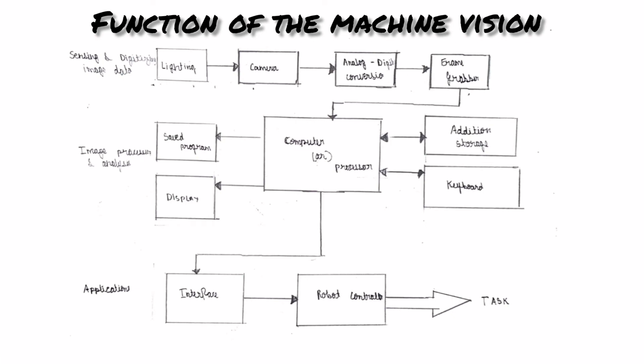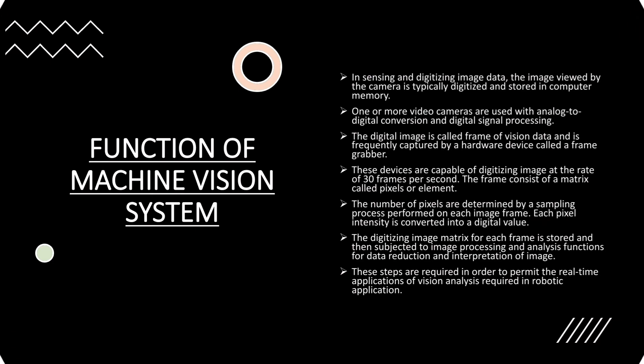As you can see, this is the diagram based on the function of the machine vision system. In sensing and digitizing image data, the image viewed by the camera is typically digitized and stored in computer memory.